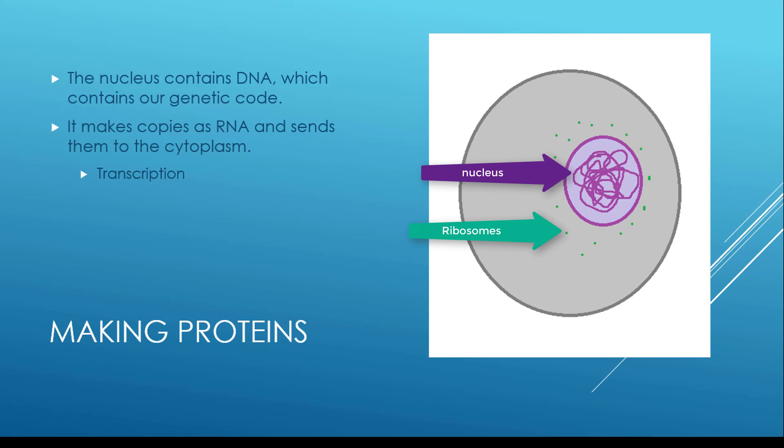Inside the nucleus, our DNA makes copies as RNA, and it's going to send those copies of RNA out into the cytoplasm. Making those copies and sending them into the cytoplasm is a process called transcription. You can see here I have an arrow showing RNA being copied and being sent out of the nucleus. That's transcription.